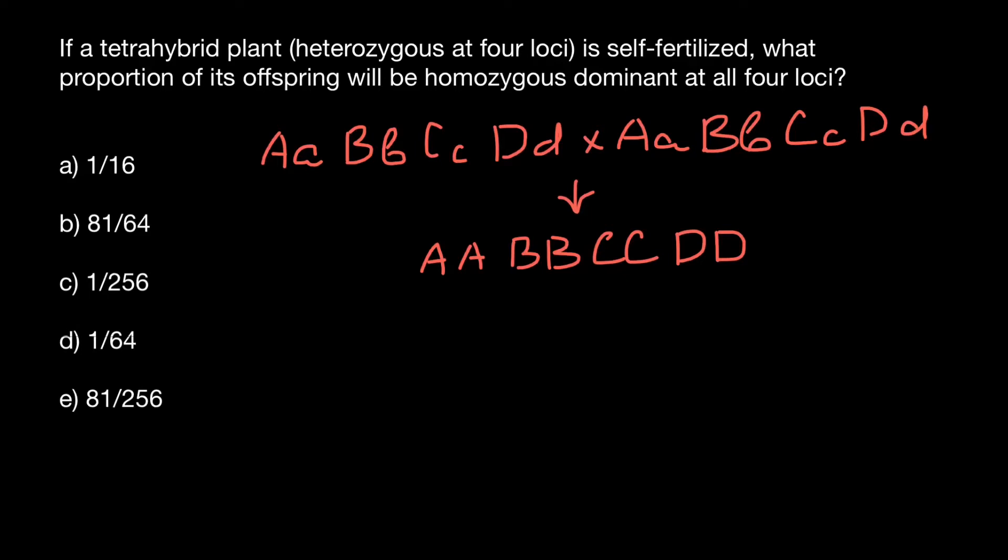Let's take only one locus, for example gene A. What is the probability when we cross two parents with the genotype Aa that their progeny will be homozygous dominant for this locus?